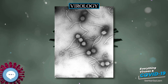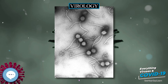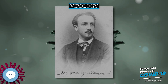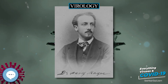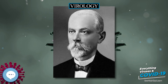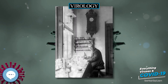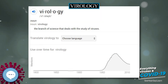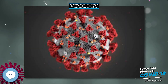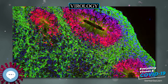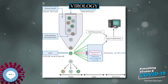The Hershey-Chase experiment in 1952 showed that only DNA and not protein enters a bacterial cell upon infection with bacteriophage T2. Transduction of bacteria by bacteriophages was first described in the same year. In 1949, John F. Enders, Thomas Weller and Frederick Robbins reported growth of polio virus in cultured human embryonal cells, the first significant example of an animal virus grown outside of animals or chicken eggs. This work aided Jonas Salk in deriving a polio vaccine from deactivated polio viruses, shown to be effective in 1955.